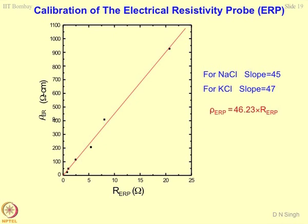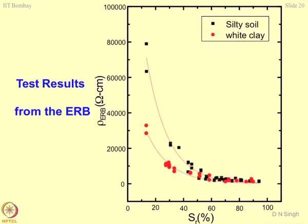First insert the probe in a sodium chloride solution to calibrate it, and then the same probe can be inserted in a geomaterial — the multiplication factor remains the same. Based on this, we got results from the resistivity box. For the two extreme soils tested — salty soil and white clay — resistivity drops down as saturation increases. These are all DC measurements at low AC current, around 10 to 20 Hz.